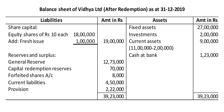Balance sheet of Vidya Limited as at 31st December 2018. Share capital: Equity shares 18,00,000 plus fresh issue 1,00,000 = 19,00,000. Reserves and surplus: General Reserve 12,73,000; CRR 70,000; Forfeited Shares account 8,000. Current liabilities 4,50,000; provisions 2,22,000. Fixed assets 27,00,000; investments 2,00,000; current assets; bank balance 1,23,000. Total both sides 39,23,000. Thank you.